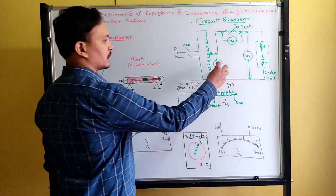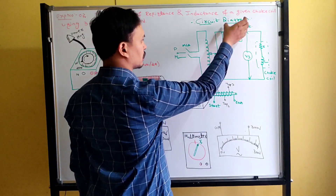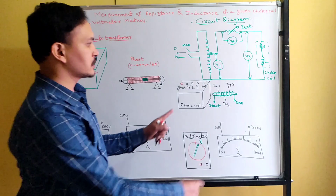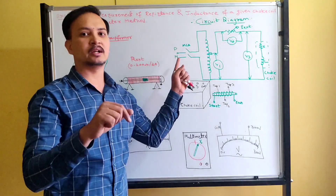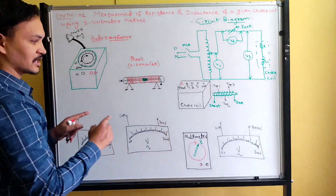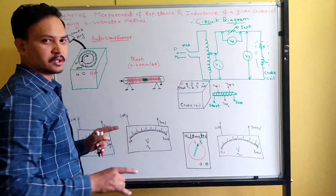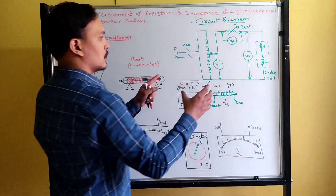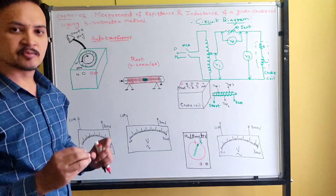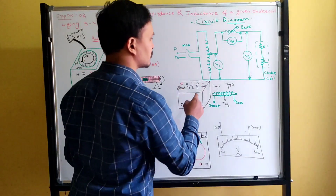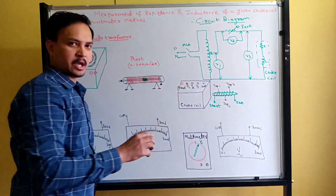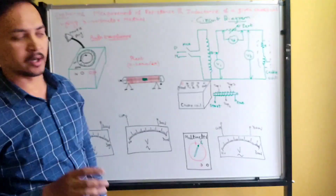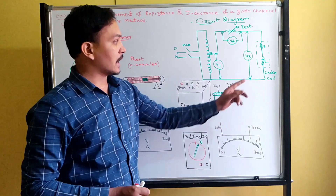One voltmeter is connected across the transformer, one voltmeter across the external resistance (the rheostat), and one voltmeter across the choke coil. This is the circuit diagram you should write in the lab test — write only the circuit diagram, not the experimental setup. The components required are: one auto transformer, three voltmeters, one external rheostat, and a choke coil.